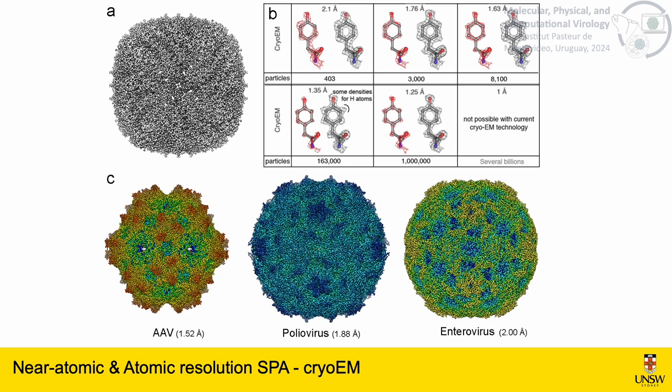This has allowed atomic resolution to be obtained in some cases. At the moment, the gold standard of the technique has achieved a best resolution of around 1.2 angstrom — real atomic resolution. In the case of viruses, there are several examples like AAV, poliovirus, and enterovirus where 2 angstrom or less resolution has been obtained. But typically, for icosahedral viruses, resolutions between 2 and 3 angstroms are systematically obtained by different groups around the world.